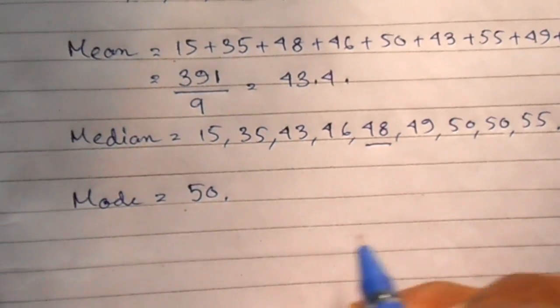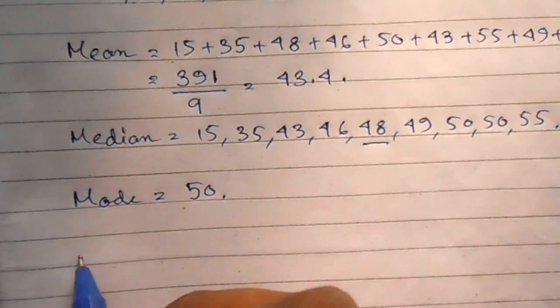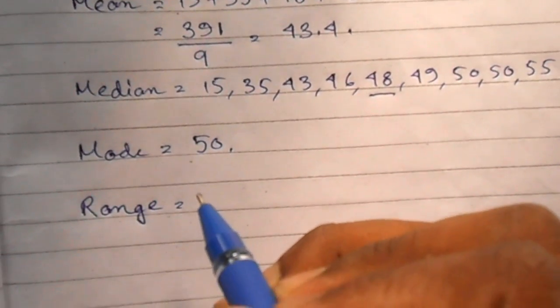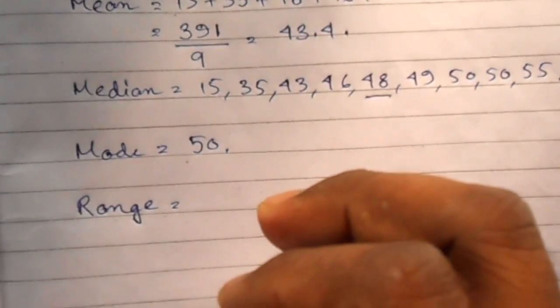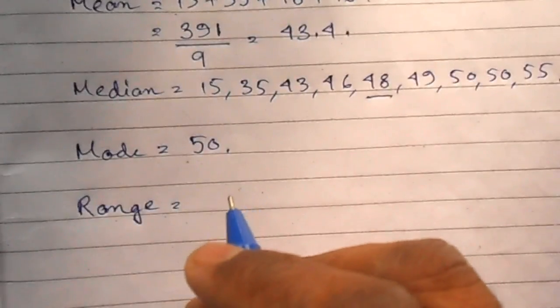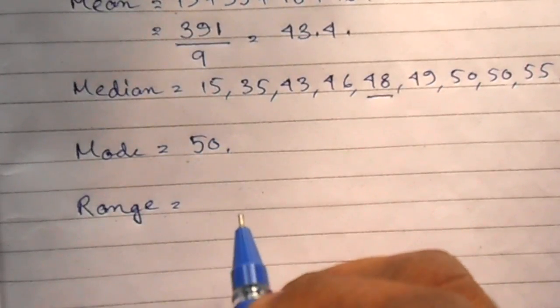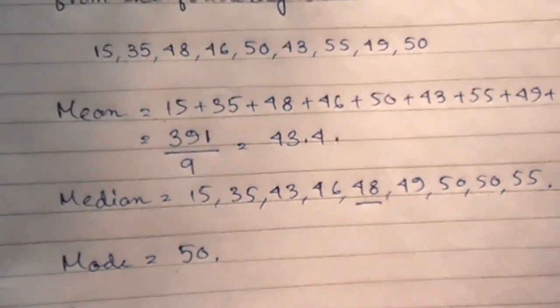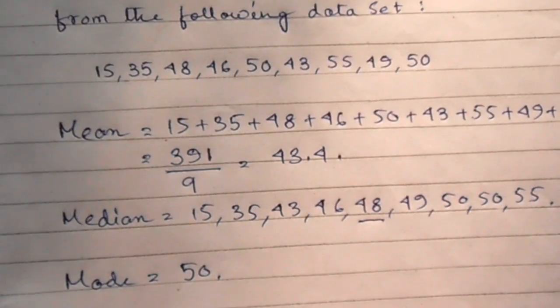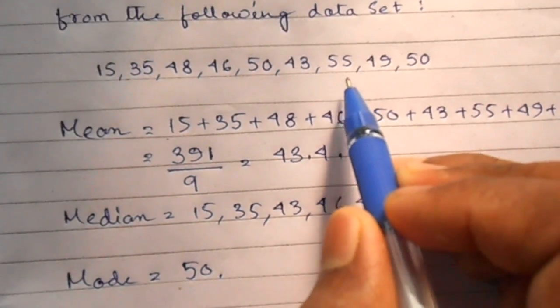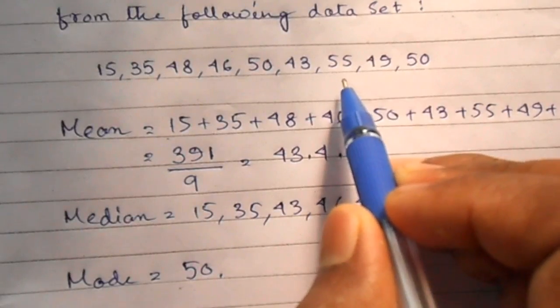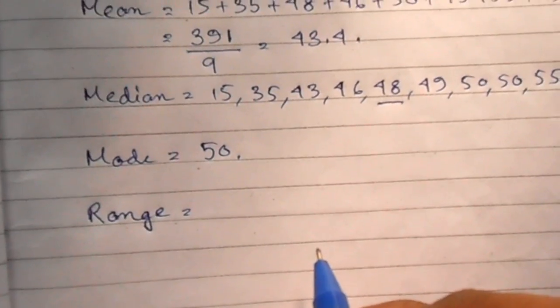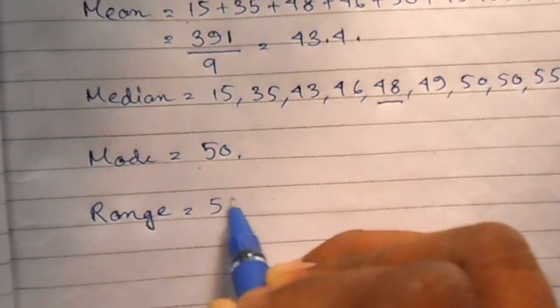Lastly, let's calculate range. Range is the difference between the greatest number and the lowest number in the data set. In our data set, the greatest number is 55.